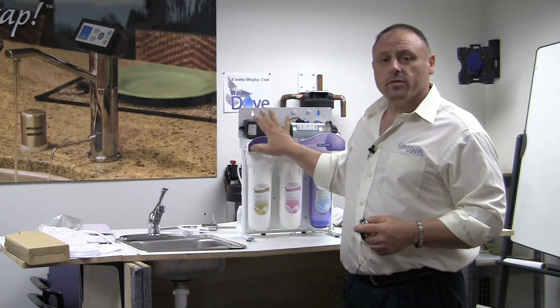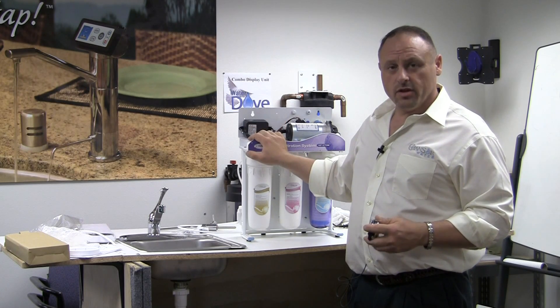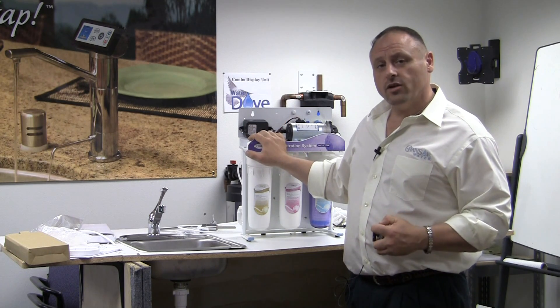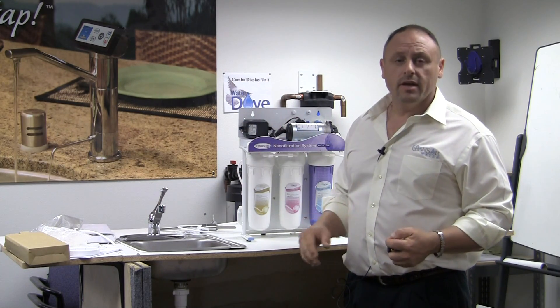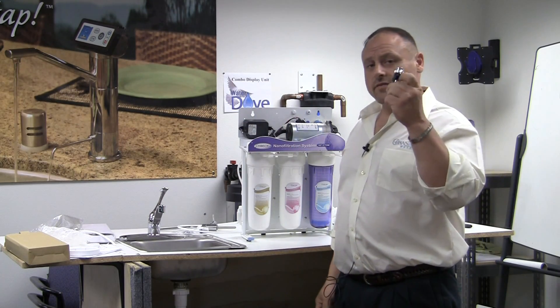It will not come with the parts that you need to get this install done, so when you're ordering the nano or if you've received it already and you've chosen to install it on the countertop, give us a call. We'll send you one of these. This is a faucet diverter.